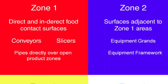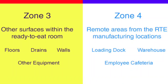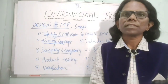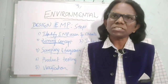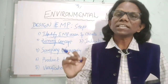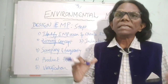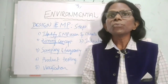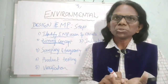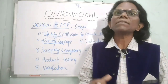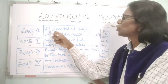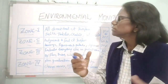Using the facility map, the team marks the hygienic zones and identifies specific sampling sites. The second step is to utilize the zoning concept to identify sampling locations. Based on sanitary zoning concepts, the facility operations are divided into four zones: Zone 1, Zone 2, Zone 3, and Zone 4.